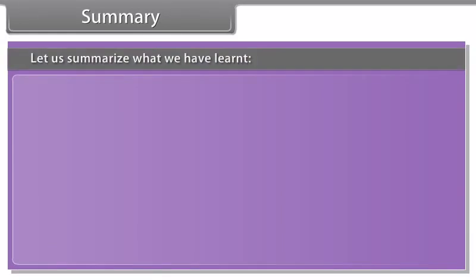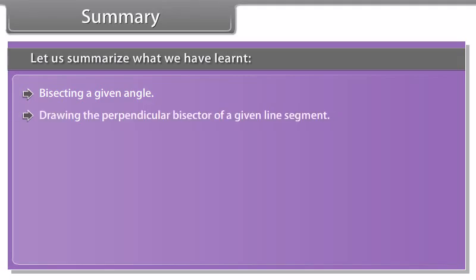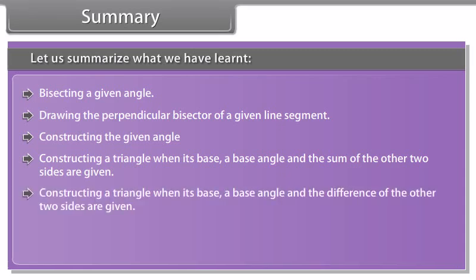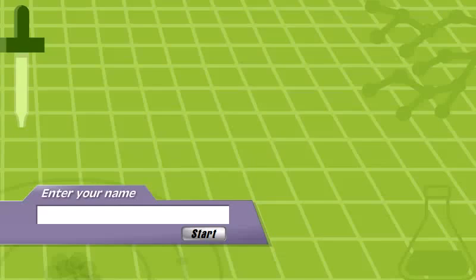The construction of a triangle is not possible if the sum AB plus AC is less than or equal to BC. Constructing a triangle when its perimeter and its two base angles are given.